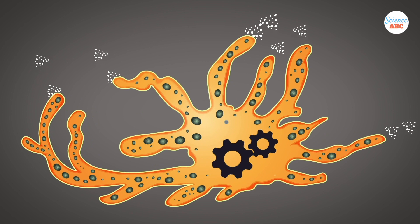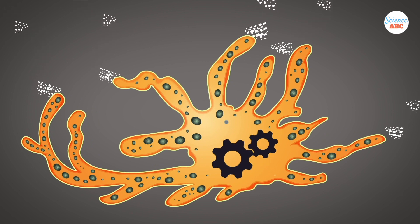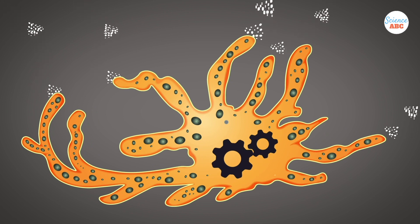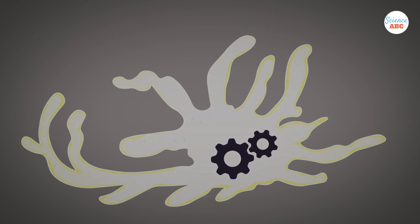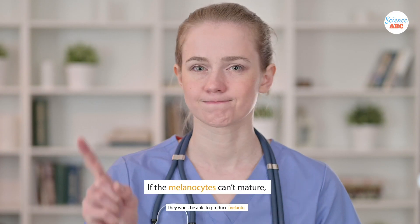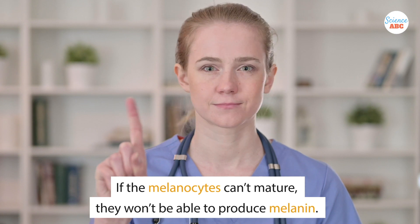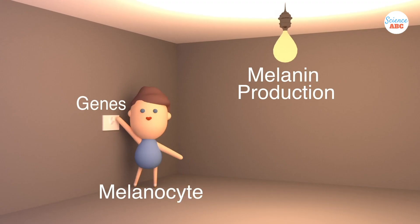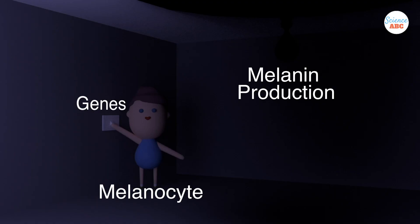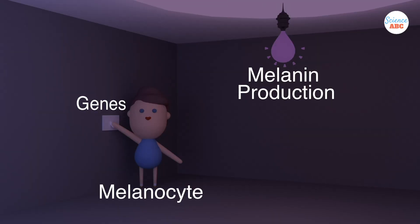One way to prevent melanin being produced is to shut down the factory that produces it. Certain genes can be switched off to prevent melanocytes from maturing. If they can't mature, they won't be able to produce melanin. Thus, melanin production can be controlled by a few genes being turned on and off.